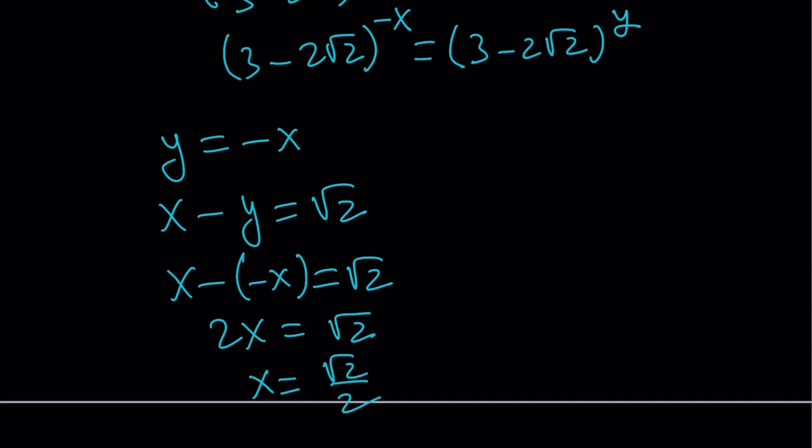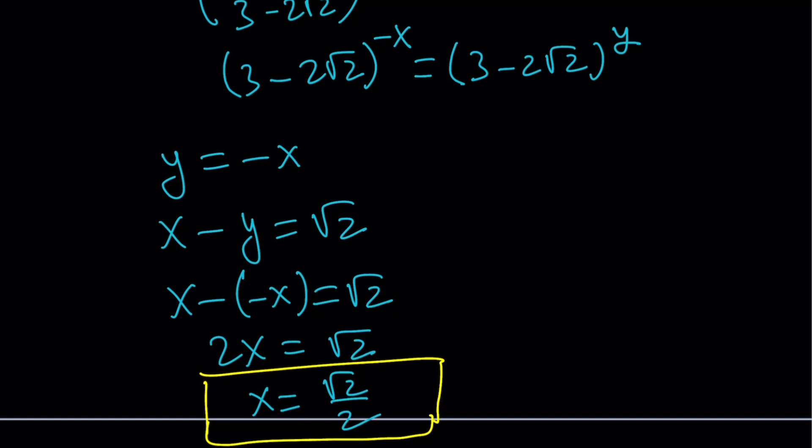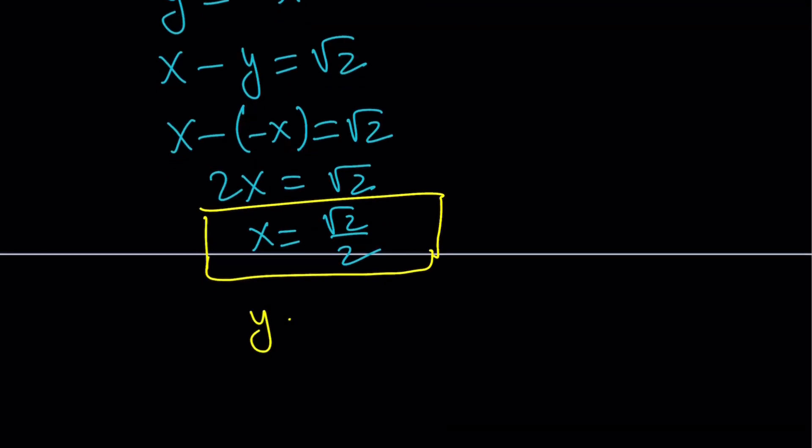If this reminds you sin(π/4) and cos(π/4), you're totally right about that. You're thinking trigonometry, and that's good. So that's the value of x. Since y and x are opposites, then we can write y as -√2/2.